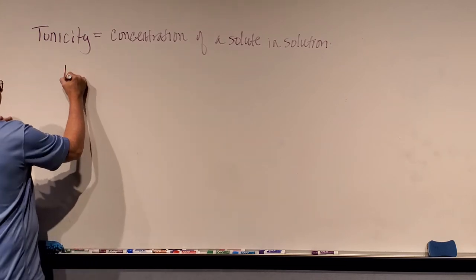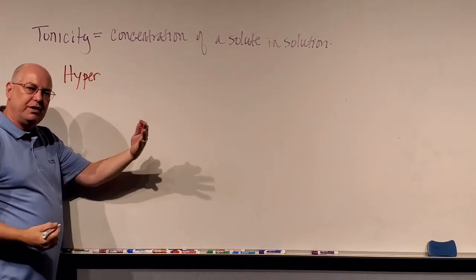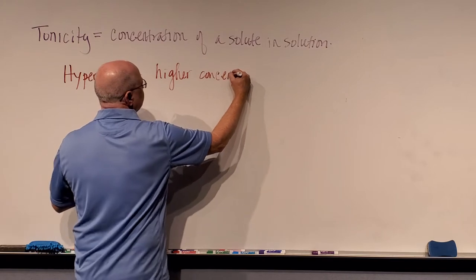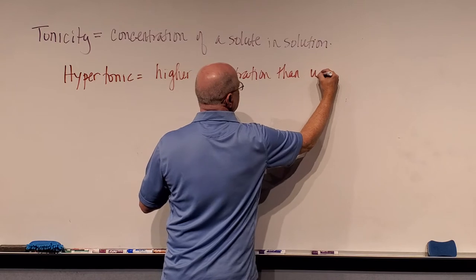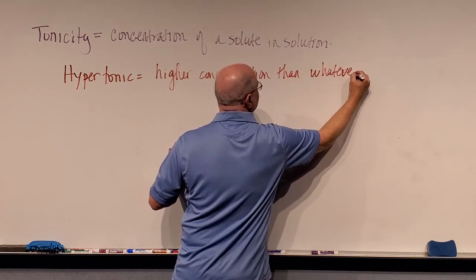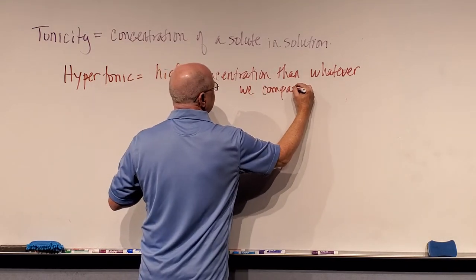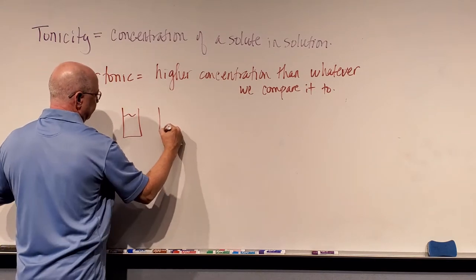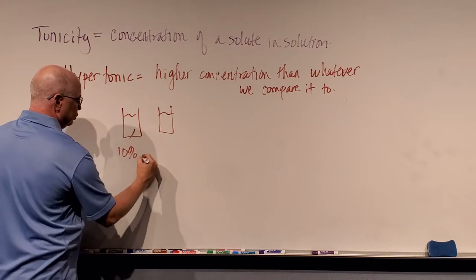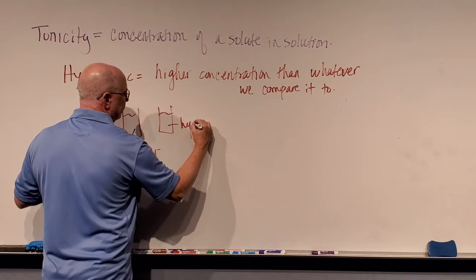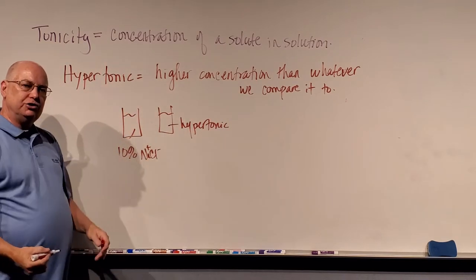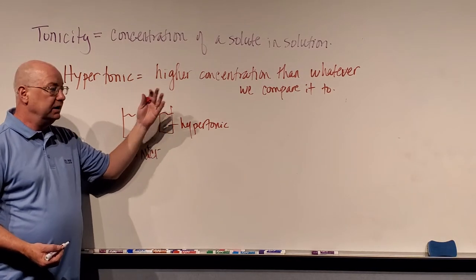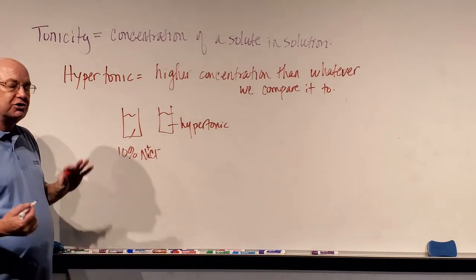From tonicity we get these terms. Hypertonic — hyper always means more than or an increase. If a substance is hypertonic, it has a higher concentration than whatever we compare it to. For example, if one bucket is 10% sodium chloride and another is hypertonic to it, then that second solution must have a concentration higher than 10% — maybe 11%, 12%, 22%, 98% — some concentration higher than the reference.